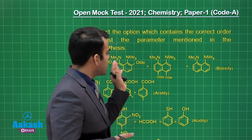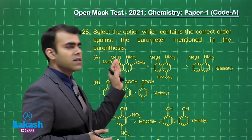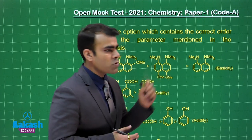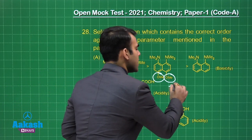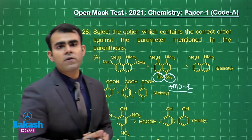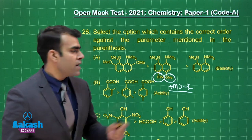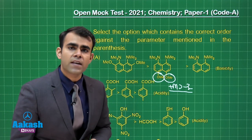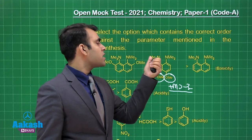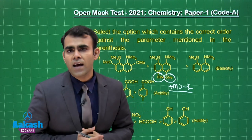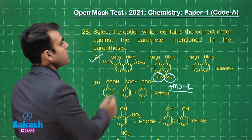Similarly, comparing the other two compounds, there is no ortho effect, so their basicity is less than the first. Comparing between these two, we have a methoxy group at the para position. We know methoxy shows +M effect and its +M is dominating over its −I. As the +M effect dominates, it is a ring-activating group, pushing electrons toward the ring, making it more electron rich. That's why nitrogen is more basic. So, according to the basicity order, this option is correct.